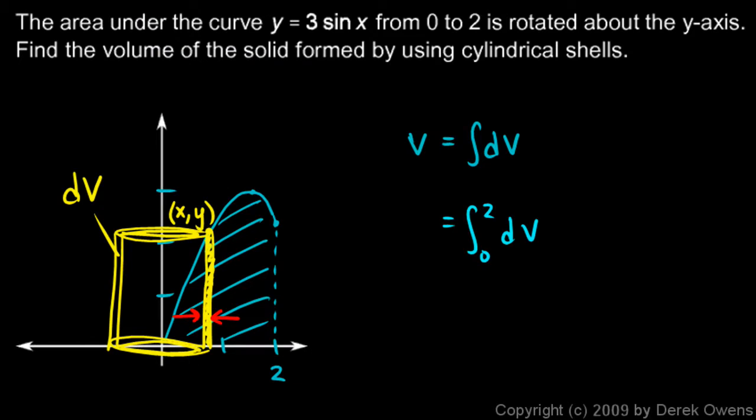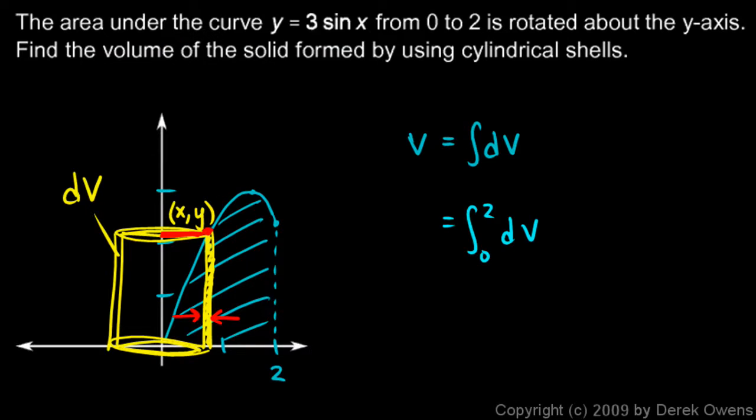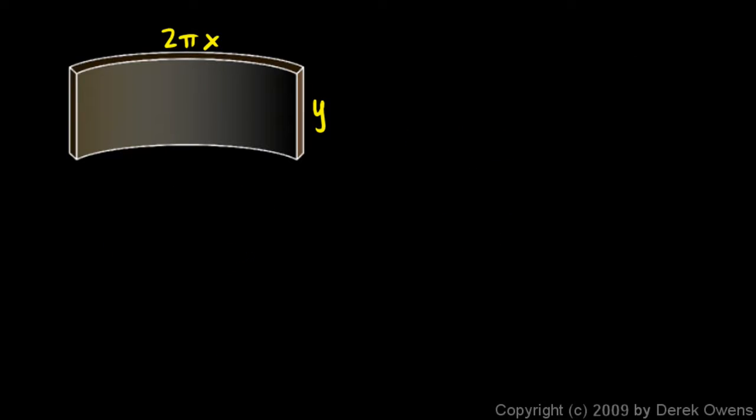See, here on our original picture, if this is the point xy right there, then the radius right there is the x coordinate. The height of the shell right here is going to be y, and you can see that on the original picture here again. Look at this point xy, the height right there is y. And then the thickness of the shell is dx, so we'll draw that in. This thickness right here is dx. So the volume dV is just going to be 2 pi x times y times dx.